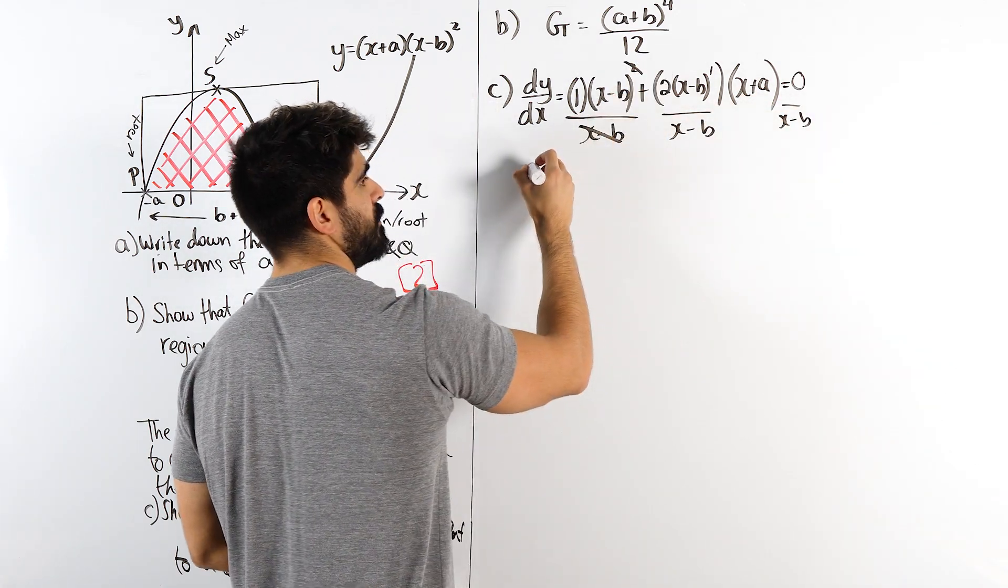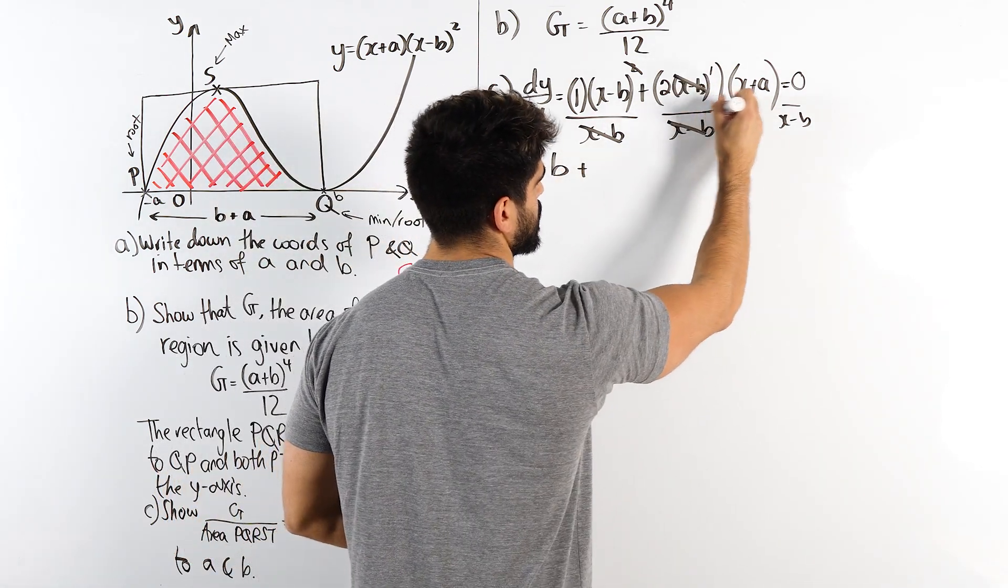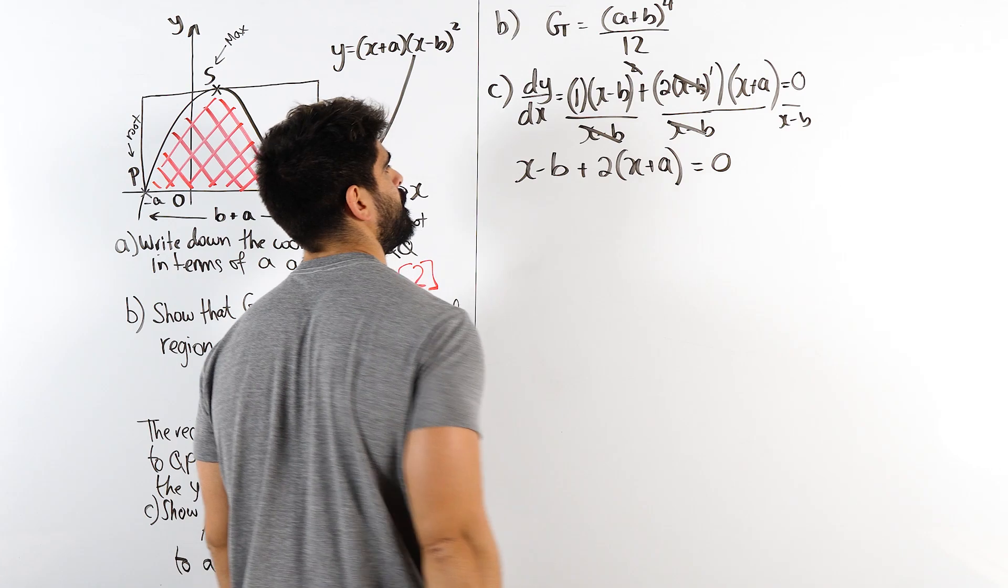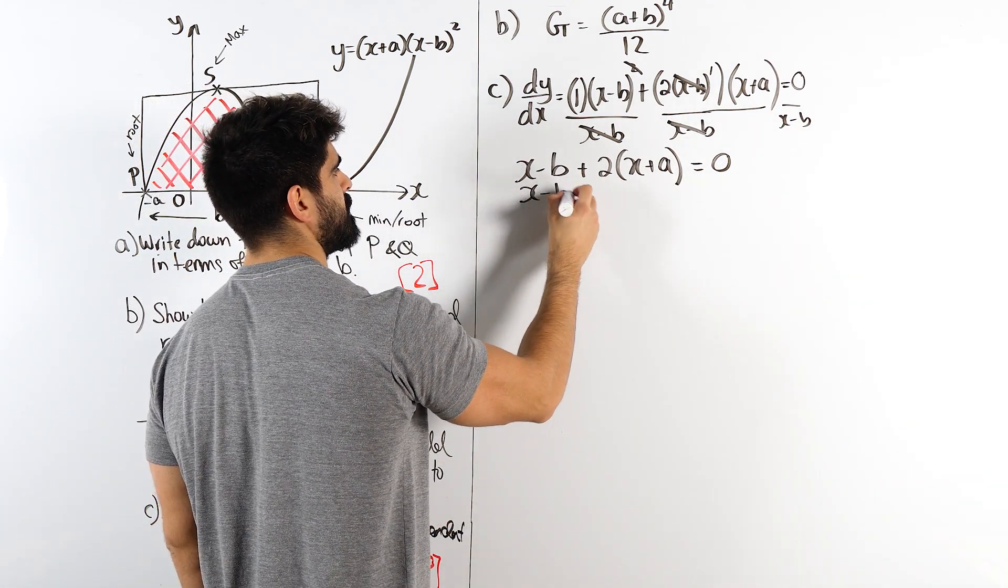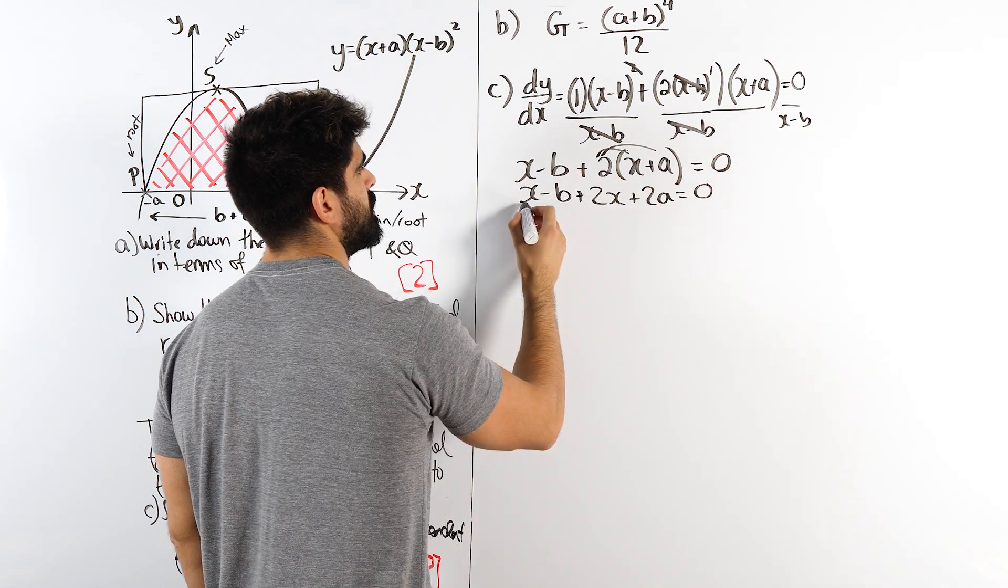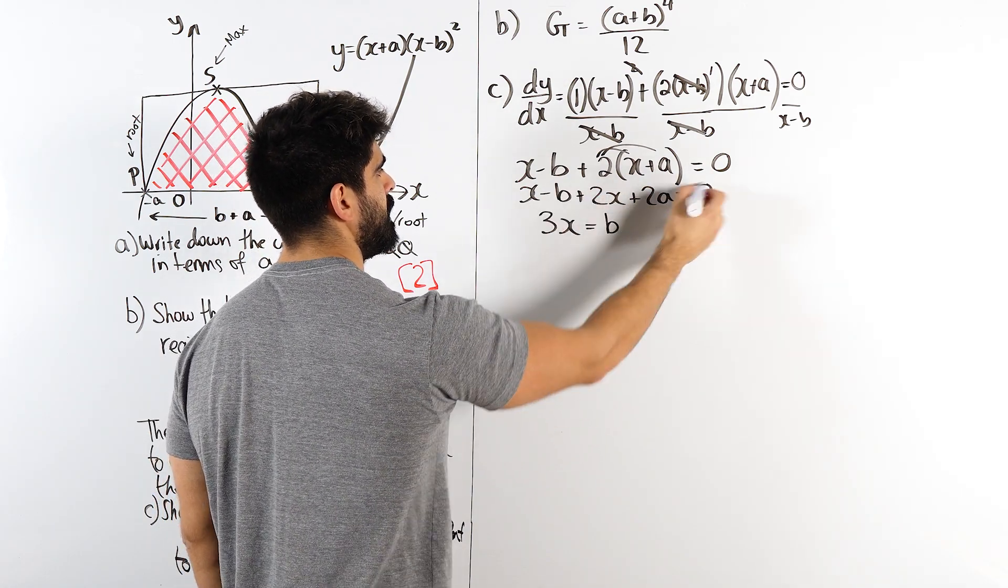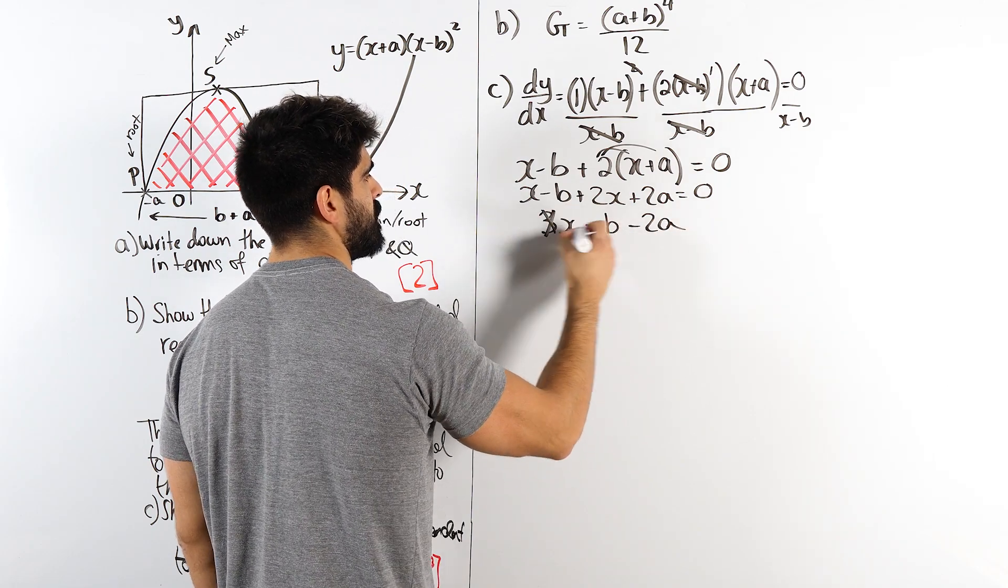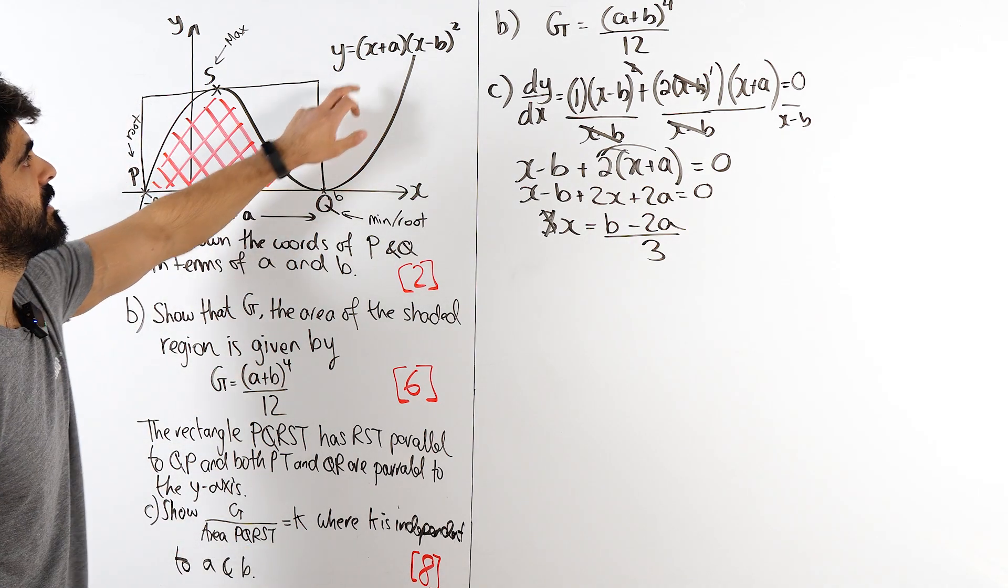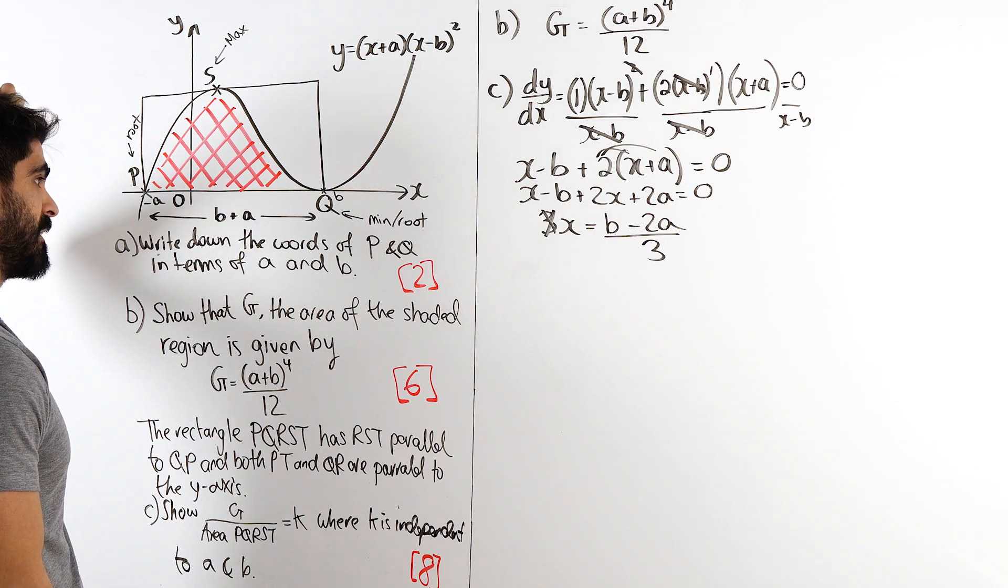That cancels that. We're just left with x minus b, and this cancels this. Remember, this is all one term because you're multiplying. So we have x minus b plus 2x plus 2a is zero. So we have 3x is b minus 2a. And then we're going to divide by three. Obviously that's not good enough, because we need the y value. So we're going to resub that into here. Hopefully things simplify nicely, and then we're going to find the area.